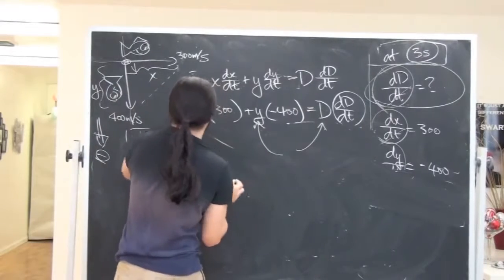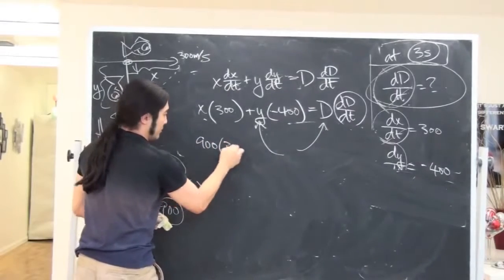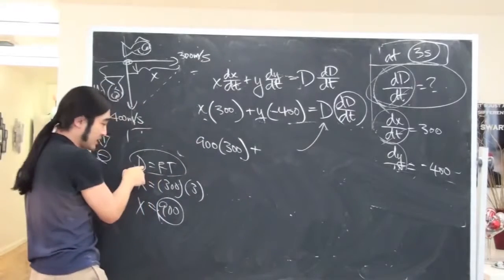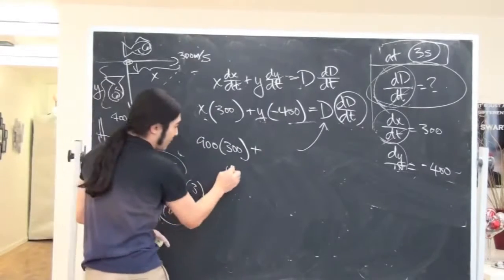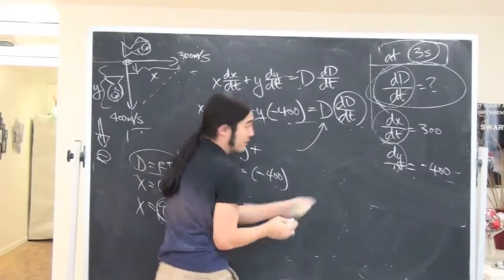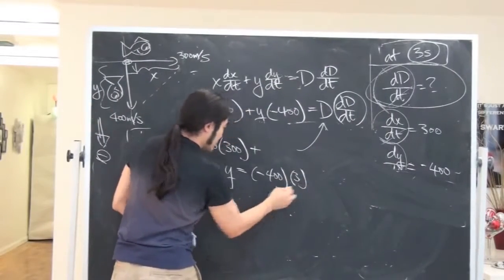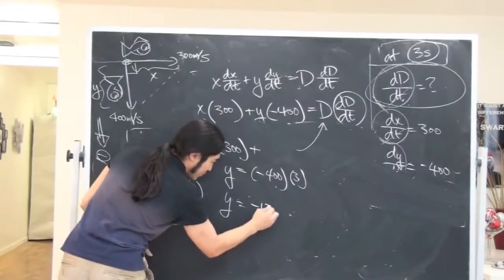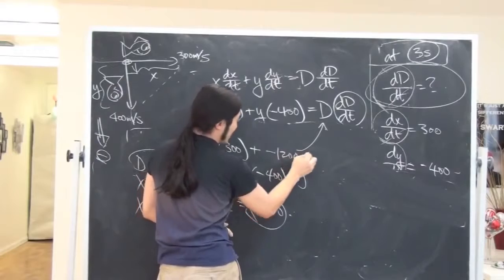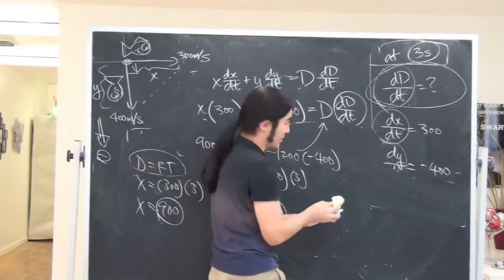And then let's plug into this y. Same thing. So remember the basic formula is distance is rate times time. So how far you've covered yy, it should be the rate, which is negative 400. dy/dt was negative 400, times the time, and you were told how much time elapsed? Three seconds. So y should be negative 1200. No big deal. So here it's negative 1200 times negative 400. Plug in for y, keeping this the same, almost done with this.